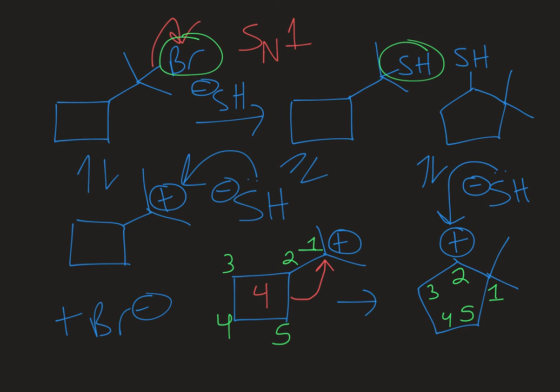This has been a look at how ring expansions can occur in an SN1 type reaction when a carbocation intermediate is present. If you found this video helpful please like, subscribe, and share with your friends. Thanks!